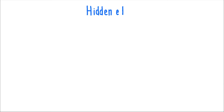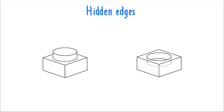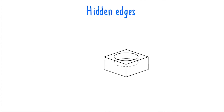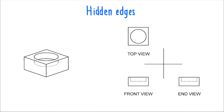Let's move on to talking about hidden edges. Hidden edges are depicted by dotted lines, and these are often used to show the position of cutouts or holes through the object. In the first object, the front and end view both make it clear this is a projection — something that sticks up from the top. While the dotted lines in the front and end view of the second object make it clear this is a cutout, something that goes down and into the object.